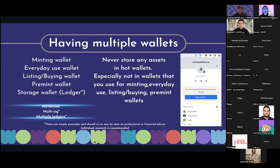Having multiple wallets. This is something new to a lot of people, or people have chosen to ignore it. Why is this in a security workshop? How many times have you heard of scams, people getting phished or having all their assets taken? Most of the time, they have all their assets in one wallet. They use that wallet to mint, connect to sites, go on OpenSea, list, buy NFTs — they're doing a lot of things but not keeping themselves safe.